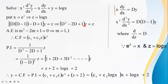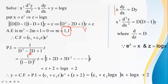The complete solution is y = CF + PI. For the complementary function, we equate to zero: m² − 2m + 1 = 0, giving m = 1, 1. Since roots are real and equal, CF = (c₁ + c₂z)e^z.